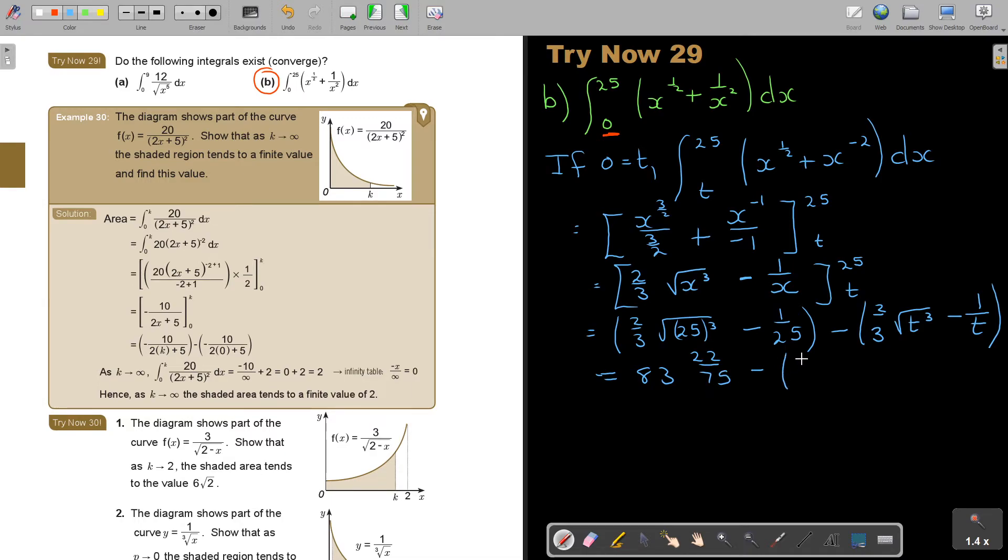Minus, and now the problem is with this one: 2 over 3 times T to the 3 over 2 minus 1 over T. Now I have to start, I have to say, as T equals 0.